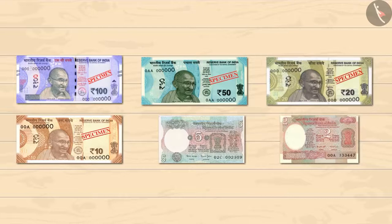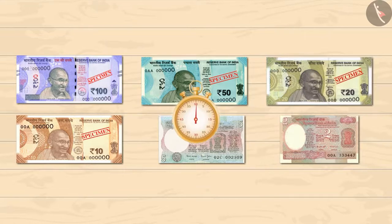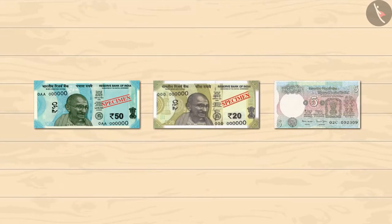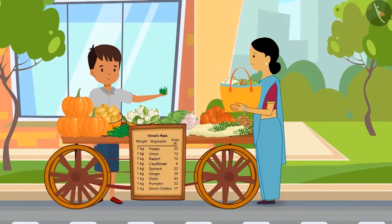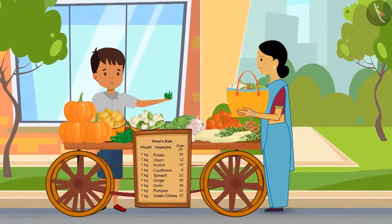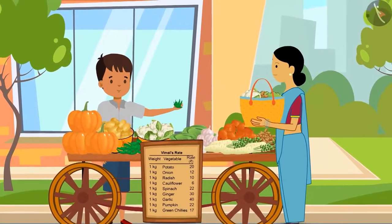A few notes have been placed in front of you. Let's help Sharma auntie to make up the total price of 75 rupees. You can use each note only once. You can pause the video to choose the notes on your own. Well done! Look — Vimal is giving some green chilies to his aunt for free.